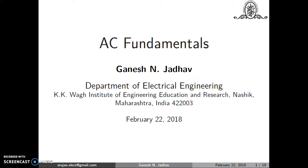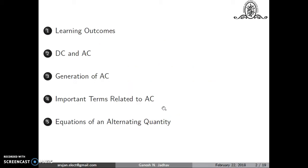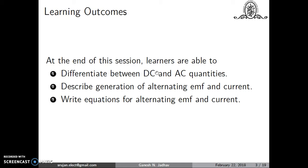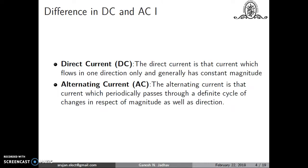Hello, welcome to Module 6 on Basic Electrical Engineering. This module is about AC fundamentals. The outline for this session: at the end, learners will be able to differentiate between AC and DC quantities, describe the generation of alternating EMF and current, and write the equation for alternating EMF and current.